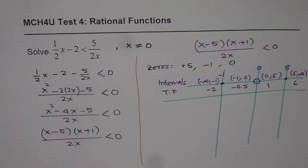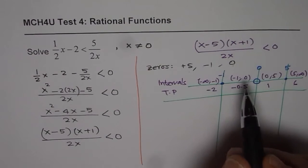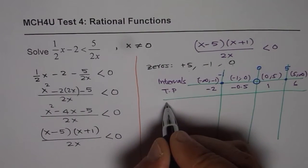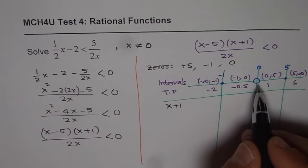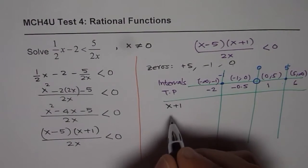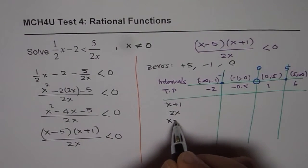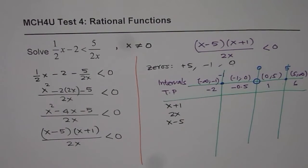Now, let us consider all our factors, one by one. So, the factor which gives you 0 at minus 1 is x plus 1. The one which gives you discontinuity at 0 is 2x. And the third one is x minus 5.